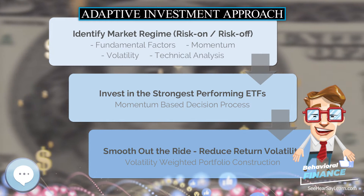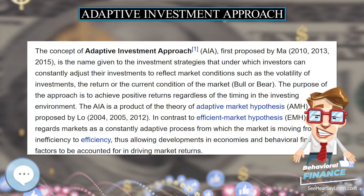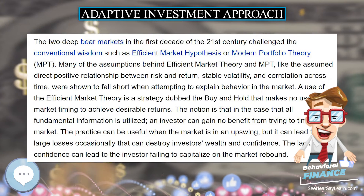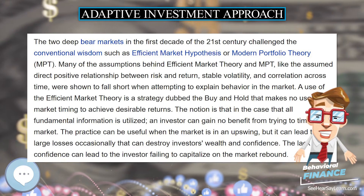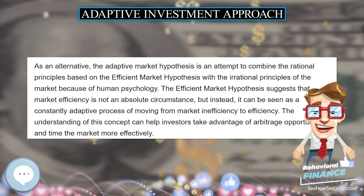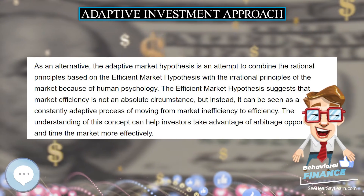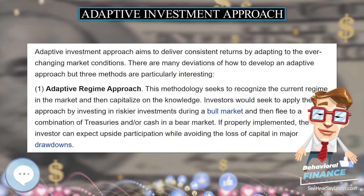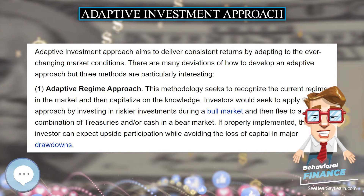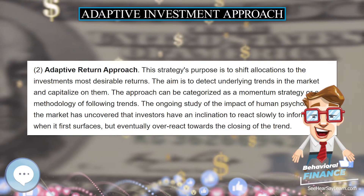1. Adaptive Regime Approach. This methodology seeks to recognize the current regime in the market and then capitalize on that knowledge. Investors would apply the approach by investing in riskier investments during a bull market and then flee to a combination of treasuries and/or cash in a bear market. If properly implemented, the investor can expect upside participation while avoiding the loss of capital in major drawdowns.